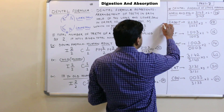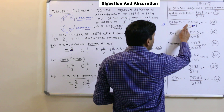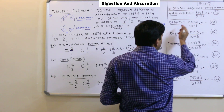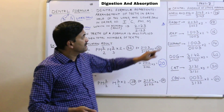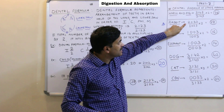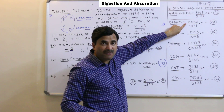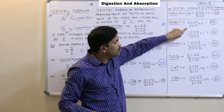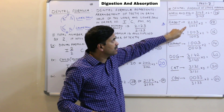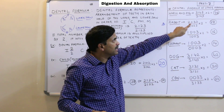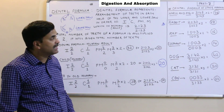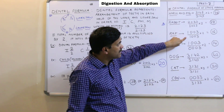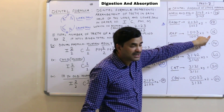For the rabbit, the dental formula is 2, 0, 3, 3 upon 1, 0, 2, 3 into 2 equals 28. Notice that the number of teeth in the upper jaw and the lower jaw are not the same in the rabbit. For deer, the formula is 1, 0, 0, 3 upon 1, 0, 0, 3 into 2 equals 16.